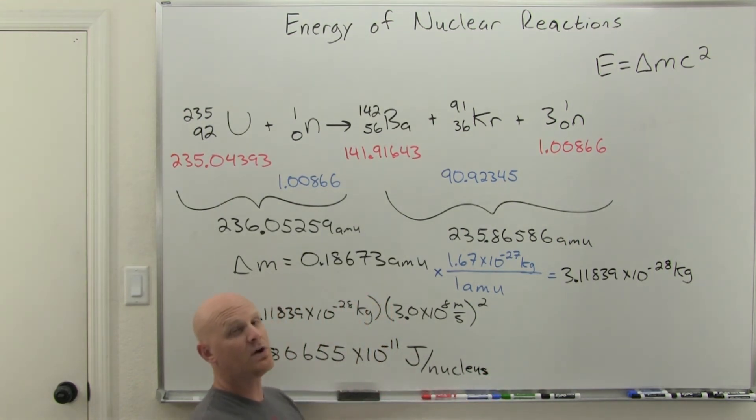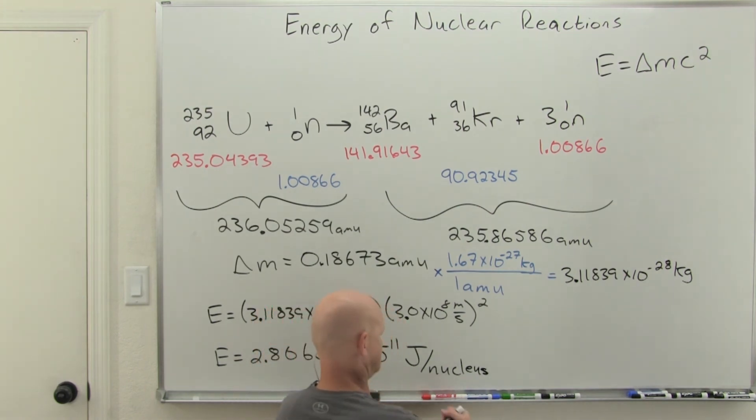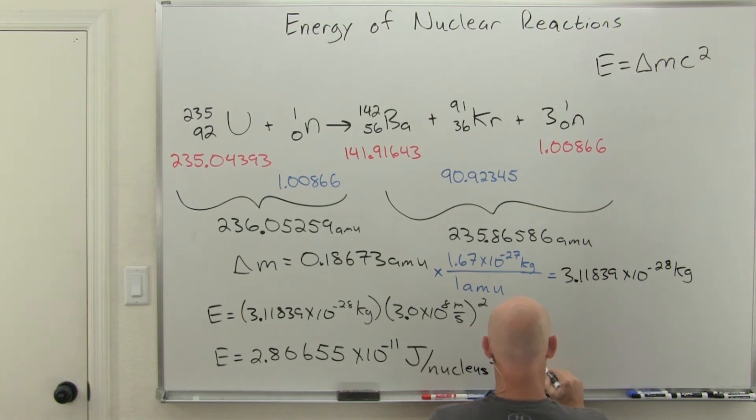When we do this for a single nucleus, we often look at this and say this is joules per nucleus. But we could also look at it in joules per mole—we'll just multiply by Avogadro's number to figure out what that is. Times 6.022 times 10 to the 23rd, and we get a very large number: 1.69010 times 10 to the 13th joules per mole.